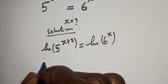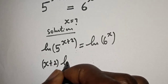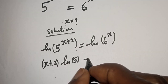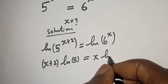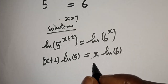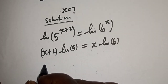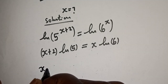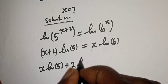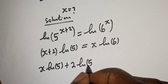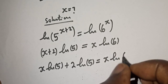This gives us: (s plus 2) times natural log of 5 is equal to s times natural log of 6. Now let's open the bracket with this ln of 5, that is: s natural log of 5 plus 2 natural log of 5 is equal to s natural log of 6.